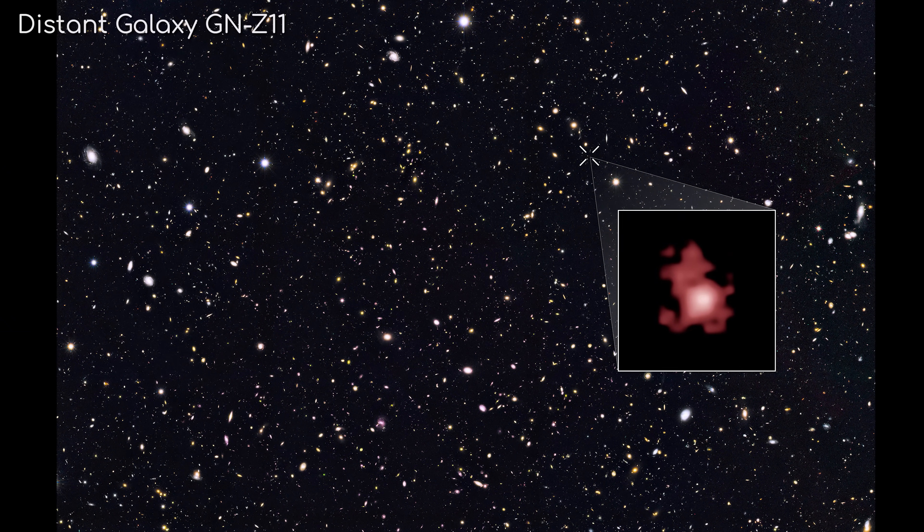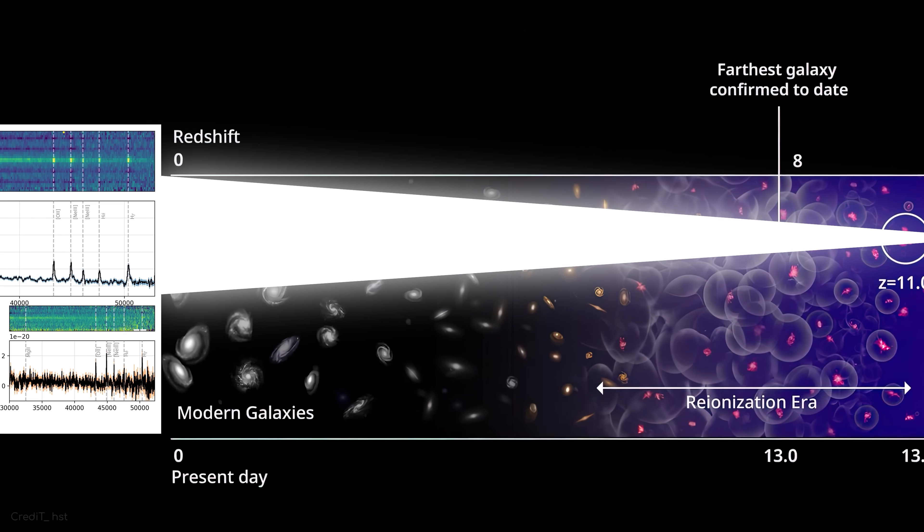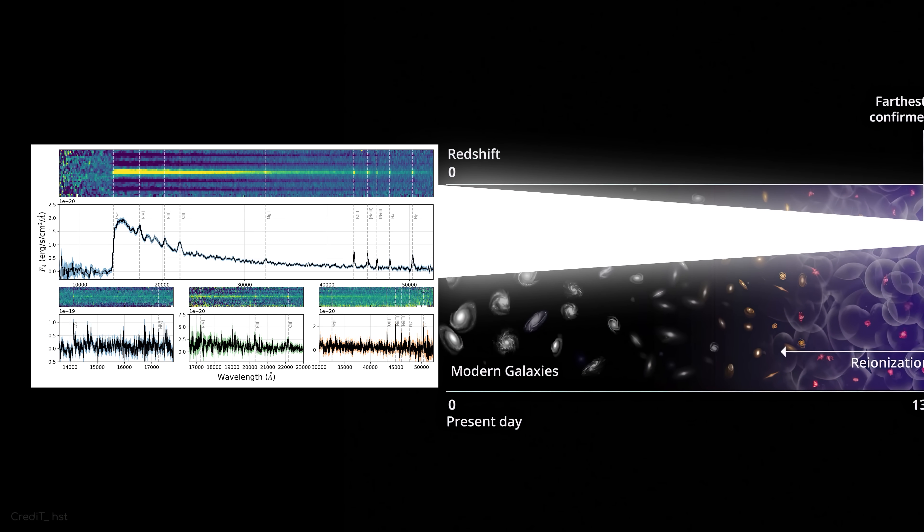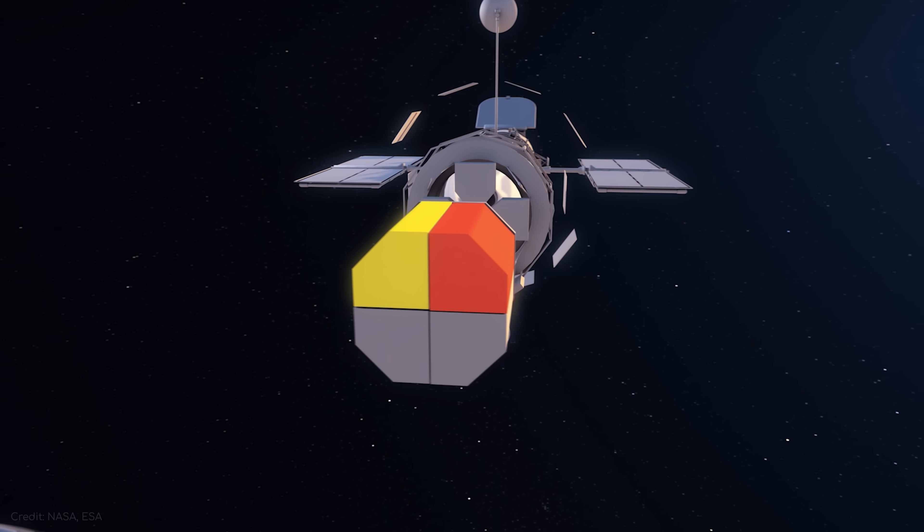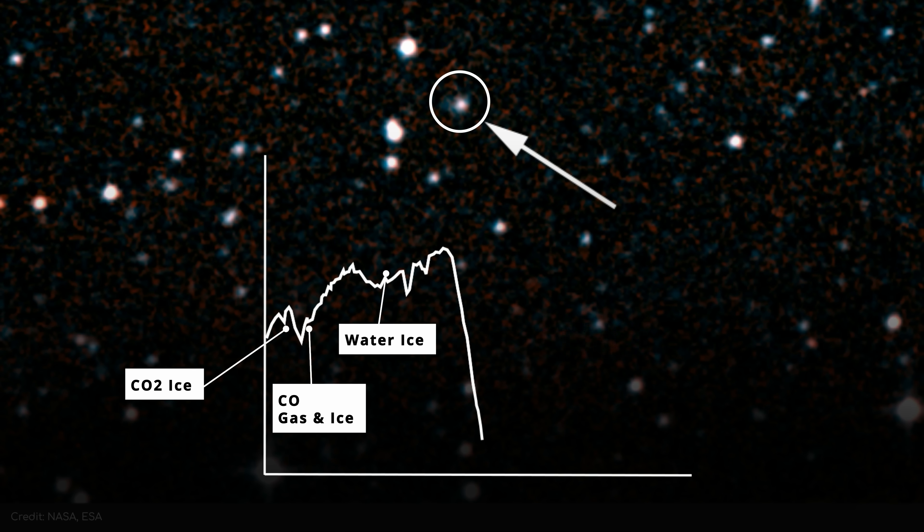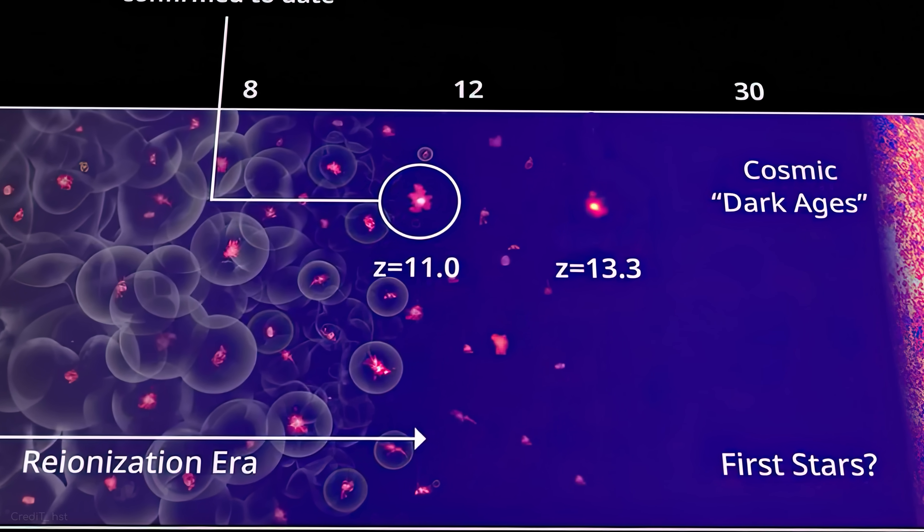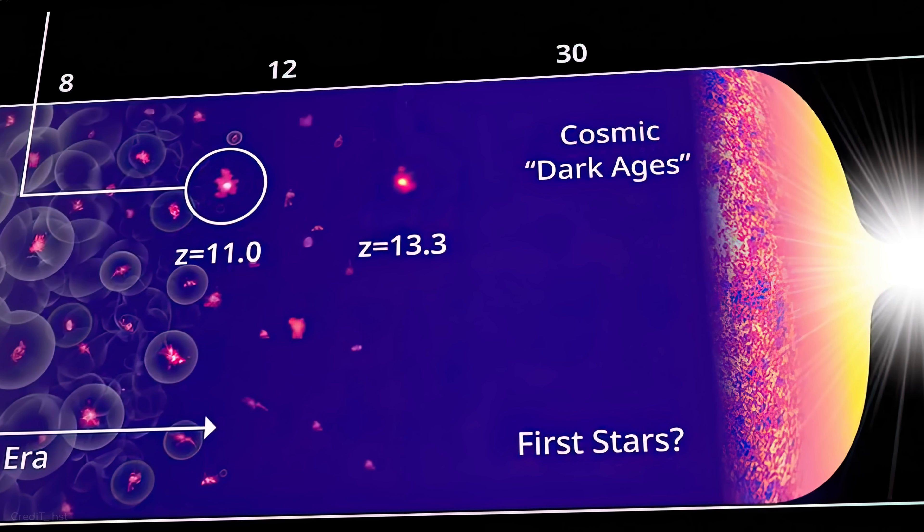The only way to probe the interstellar medium's makeup is to shine a light through it, and then see which lines in your spectrograph get blocked out. This can tell scientists what elements might make up a particular nebula or dust cloud, but this gets harder and harder to do the further away the target is. Eventually, it becomes completely impossible to get an exact estimate.